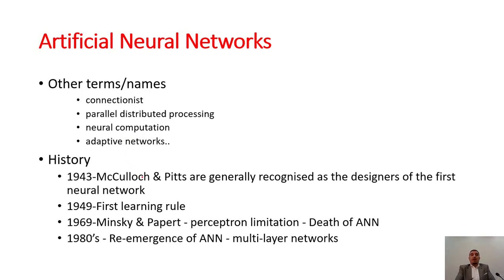The concept behind computer vision is based on artificial neural networks and machine learning. Some people call it connectionist parallel distributed processing, neural computations, or adaptive networks. It was discovered in 1943 and the first learning was in 1949.